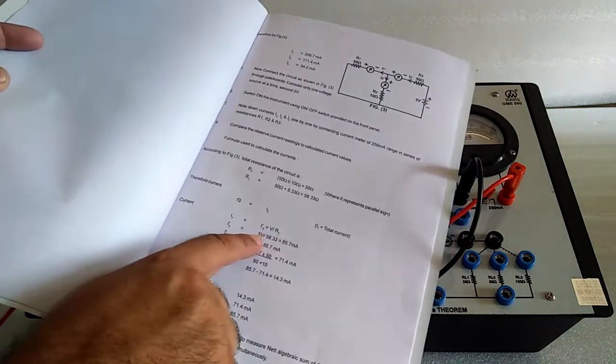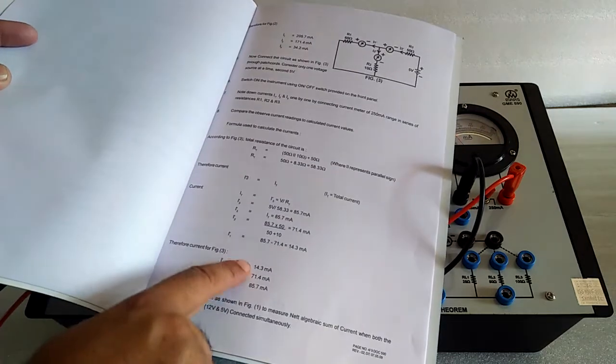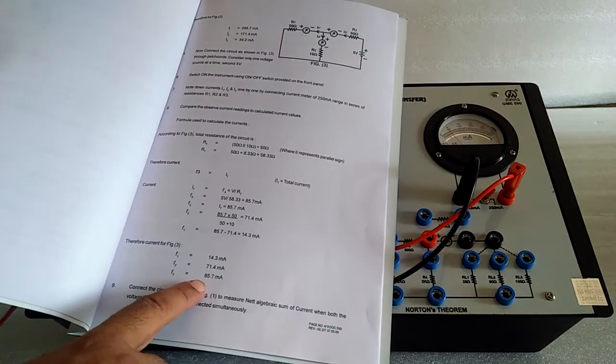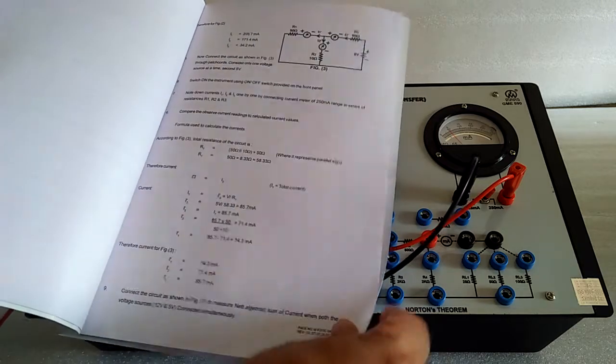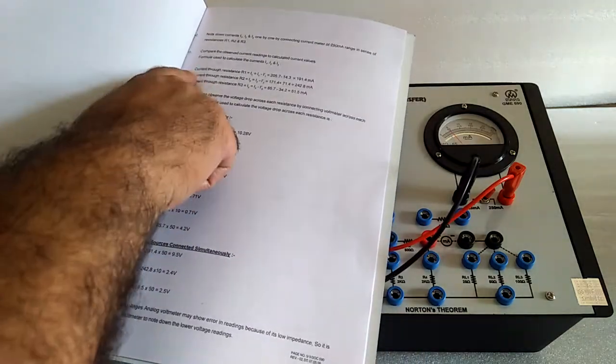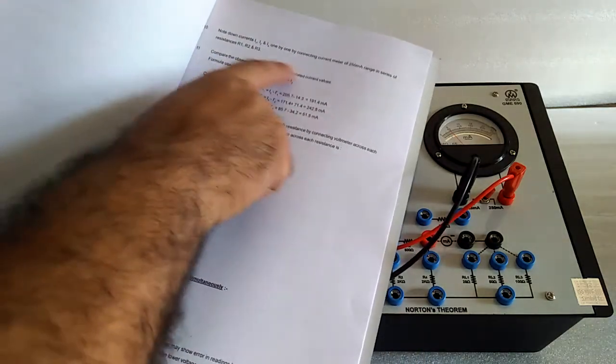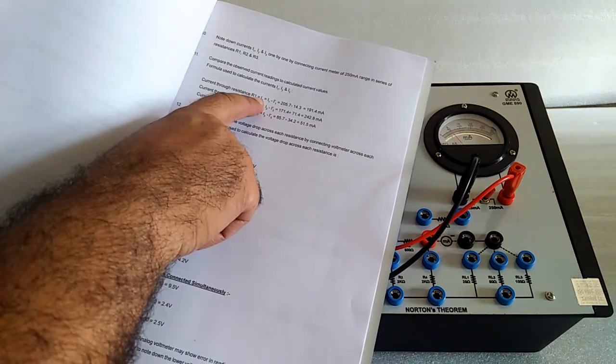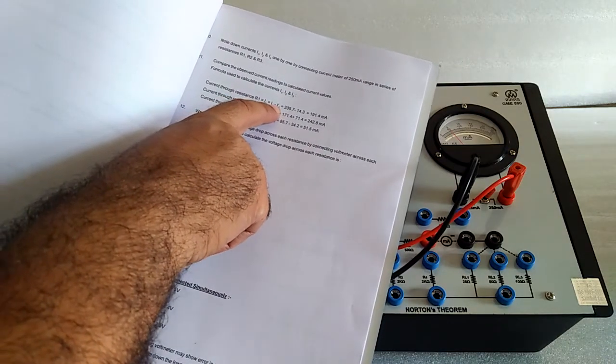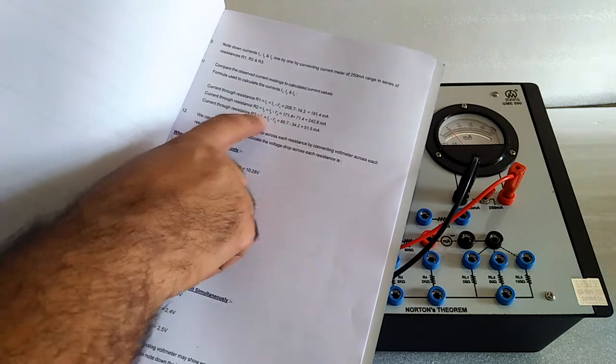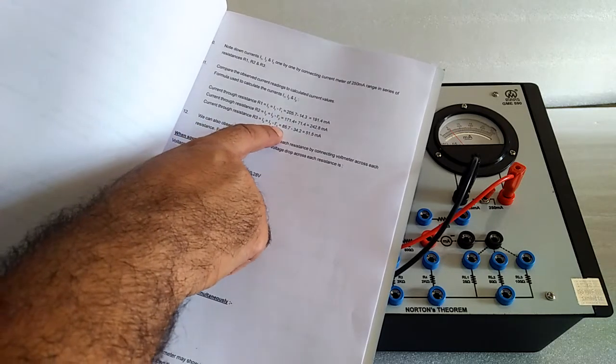And when using 5V, then current is here. When both supplies are used, then I1 is equal to I1 minus I1 dash, I2 is equal to I2 minus this.